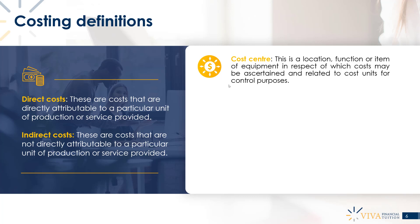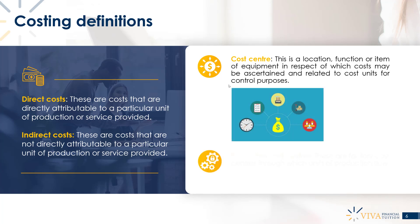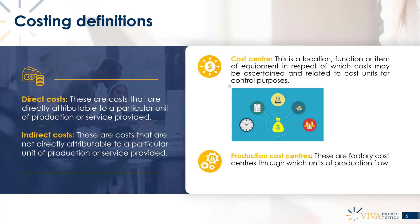Cost centers can be broken up into production cost centers and service cost centers. A production cost center is related to the production flow — for example, the process of adding sugar into the chocolate to produce the chocolate bar mix. A service cost center, like the cleaning department, is not directly related to production but supports it. The cleaning activity supports the production of the bar without being directly involved in producing it.